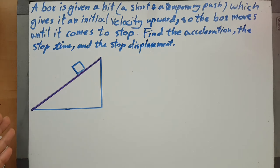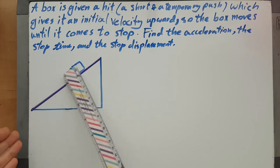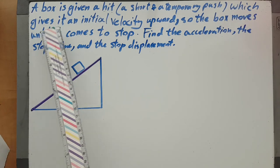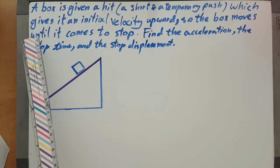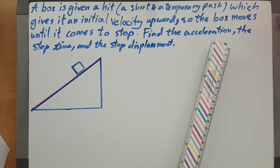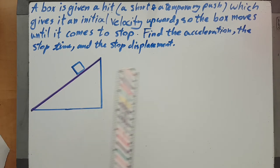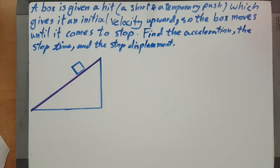Okay, this box is given a hit, a short temporary push, which gives it an initial velocity upward, so the box moves until it comes to stop. Find the acceleration and then the stop time and the stop displacement. I hope you have seen the previous video, but let's...